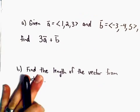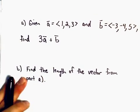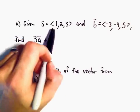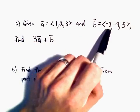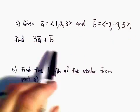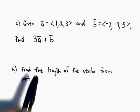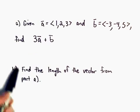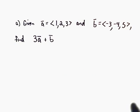All right, in this example, we've got vectors in component form. So vector A has the components 1, 2, 3, B has components negative 3, negative 4, positive 5. We want to find the vector 3A plus B, and then in part B, we're going to find the length of that vector.